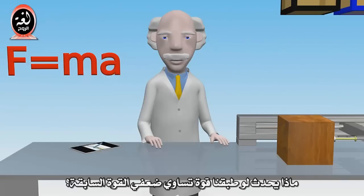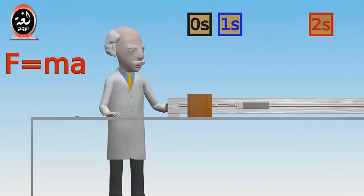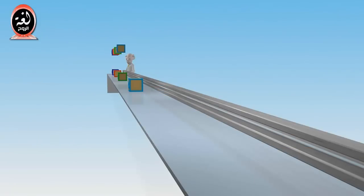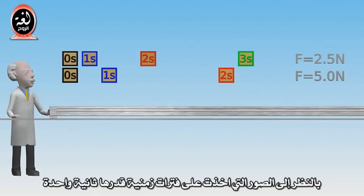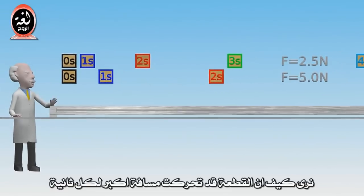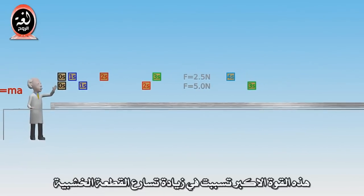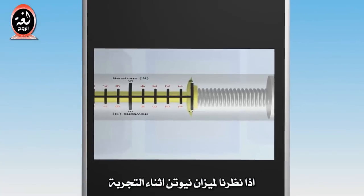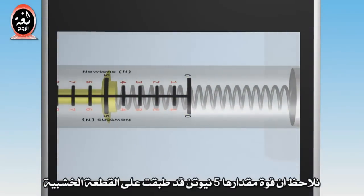What will happen if we apply a force twice as large? Let's apply a force of five newtons to the block and see what happens. Looking at the snapshots at one-second intervals, you can see how the block has moved a further distance for each second under the action of the larger five newton force. This is a result of the larger force increasing the acceleration of the block. Looking at the recording of the Newton balance during the test, we see that a force of five newtons was indeed applied.